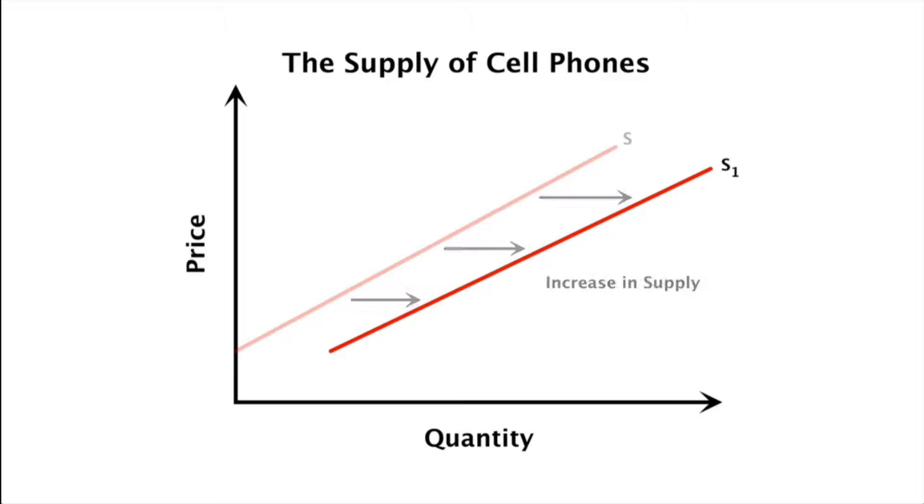We represent this increase as a rightward shift of the supply curve from S to S1.